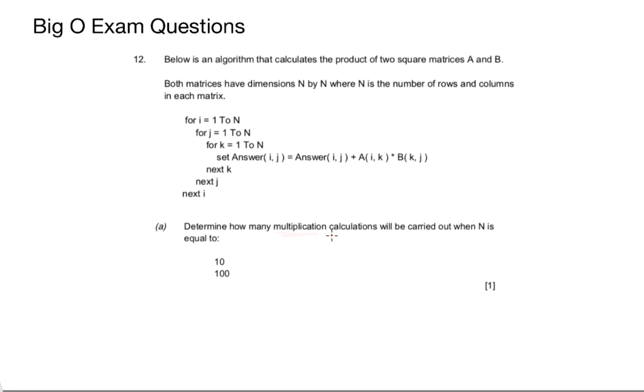The first question asks us to determine how many multiplication calculations will be carried out when N is equal to 10 and 100. So you get one mark for this question and the first thing we've got to do is look at what does it mean by multiplication calculations. If you look at the pseudocode given, I can only spot one part of the algorithm that actually carries out multiplication and that's when we times A[I, K] by B[K, J]. So there's only one instance where multiplication occurs.